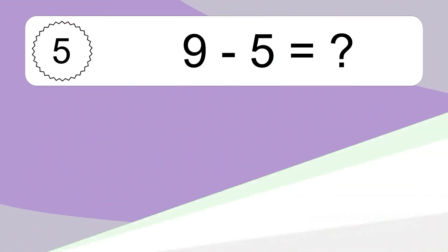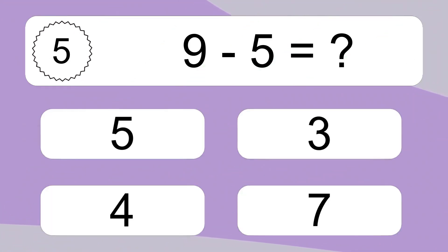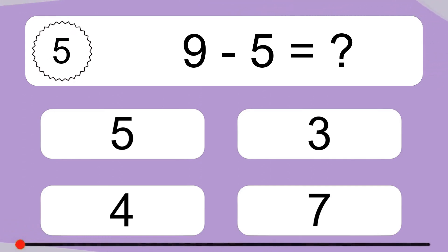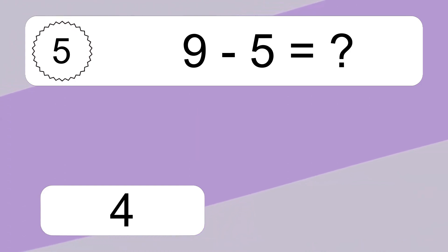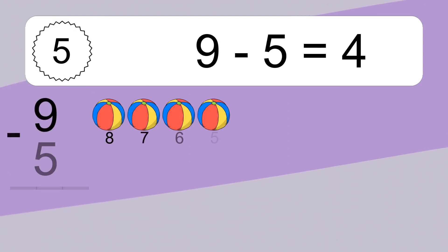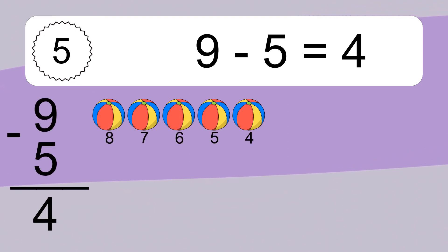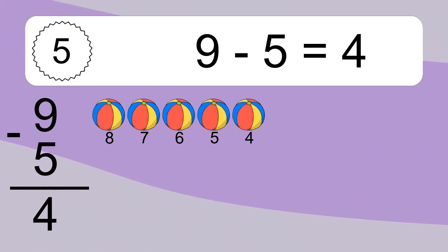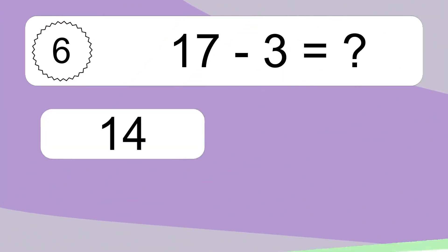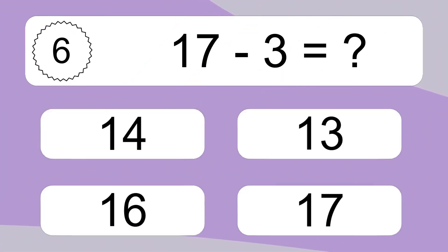9 minus 5 equals what? 9 minus 5 equals 4. Let's count it! 8, 7, 6, 5, 4.